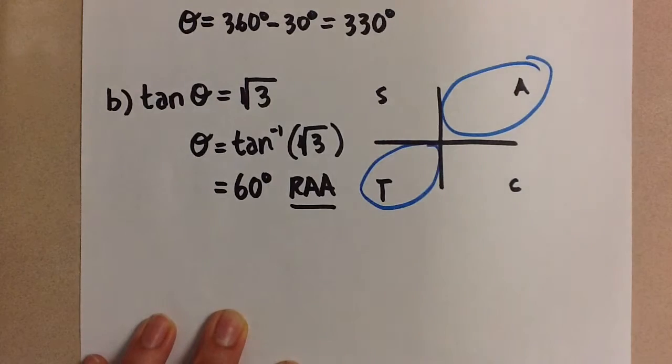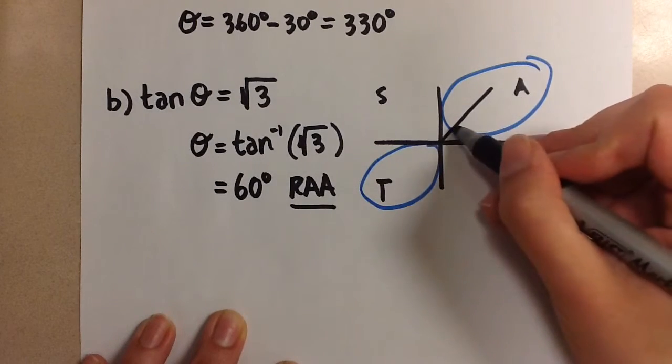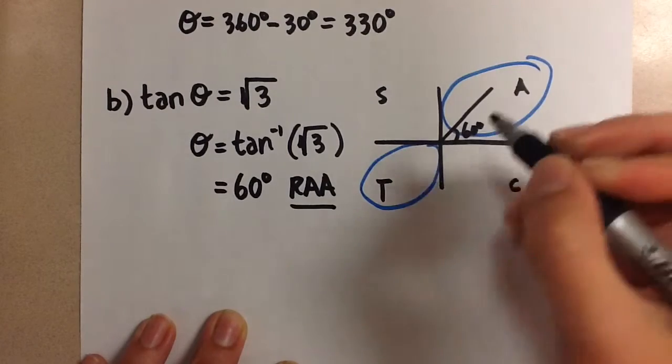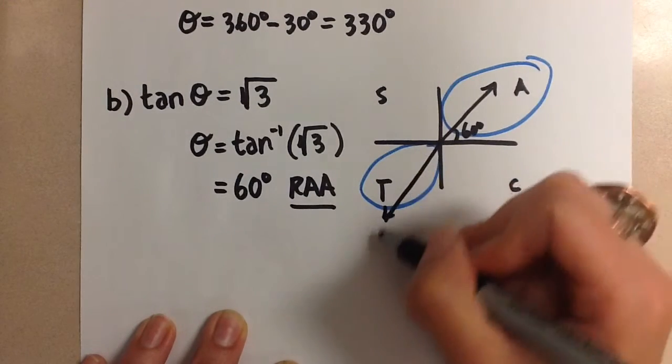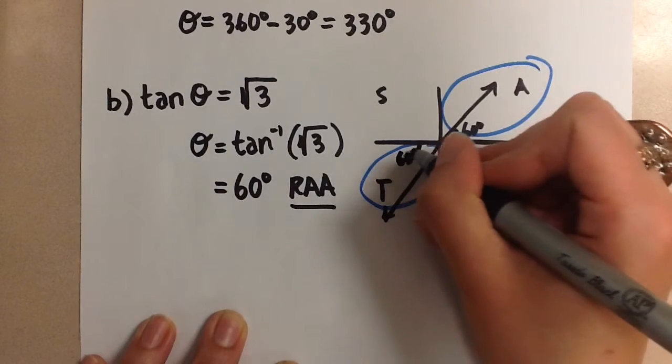So those are the two quadrants we're going to draw that related acute angle of 60 degrees. So we get a 60 degree angle here and we get a 60 degree angle here.